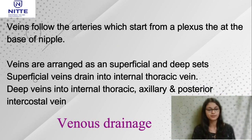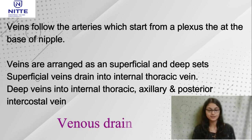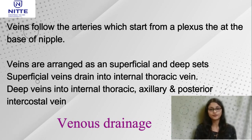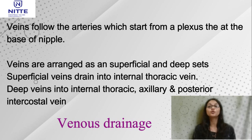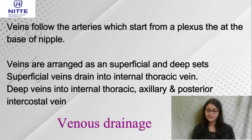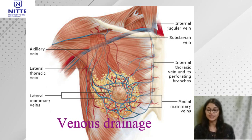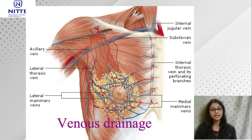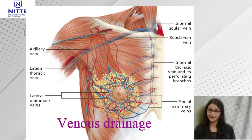The venous drainage of the mammary gland follows the arteries, starting from a plexus at the base of the nipple. It is divided into superficial and deep sets. The superficial veins drain into the internal thoracic vein; the deep veins drain into the internal thoracic, axillary, and posterior intercostal veins. The superficial veins drain the skin except the areola and nipple, whereas the deep set drains the parenchyma and fibrous stroma including the areola and nipple.